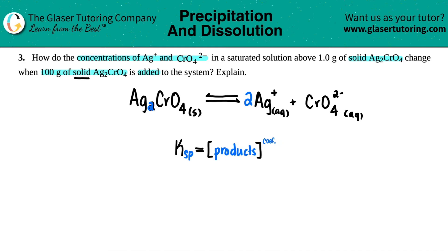The KSP is always going to just equal the products raised to the coefficients. So KSP for this one would equal the concentration of your products. So it would be the concentration of Ag plus times the concentration of the CrO4 two minus. But now we just have to be very careful. It's raised to the coefficients. There was a two in front of the silver and no number in front of the chromate. Remember, that just means that there was only one of them.